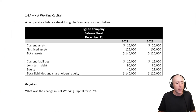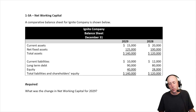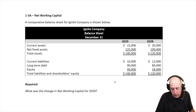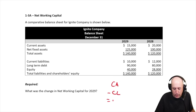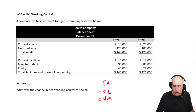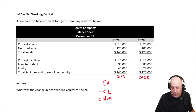Let's get down to business. A comparative balance sheet for Ignite Company is shown below. The question asks: what's the change in net working capital? Net working capital is current assets minus current liabilities — that equals our net working capital. We'll look at 2029 and 2028.